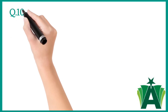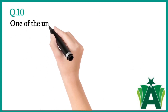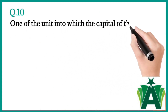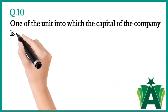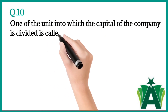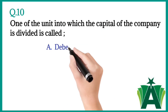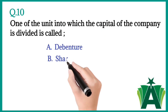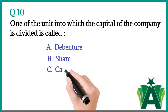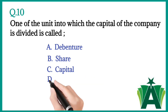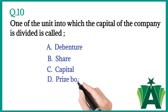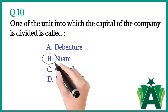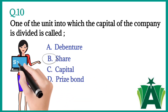Question number ten: One of the units into which the capital of the company is divided is called — a) Debenture, b) Share, c) Capital, d) Prize bond. The correct answer is b) Share.